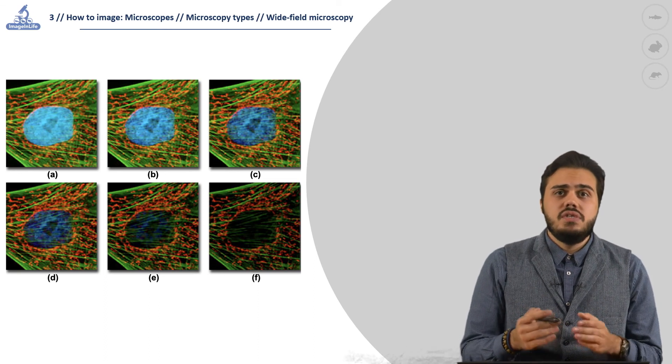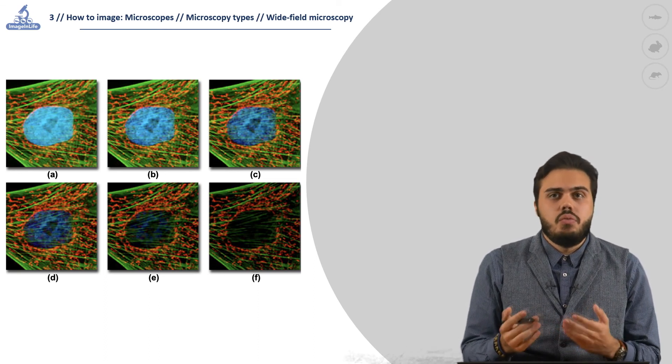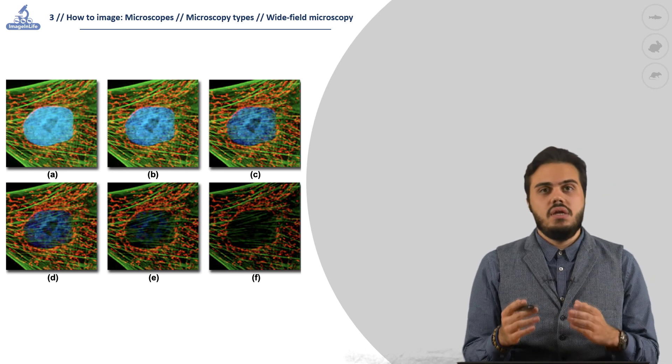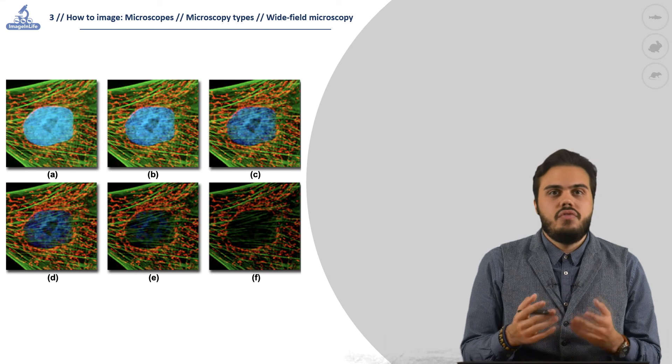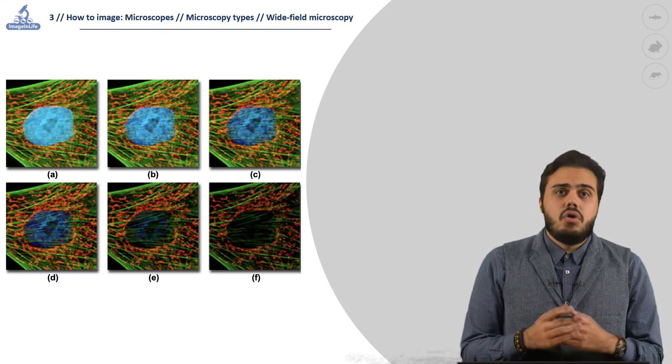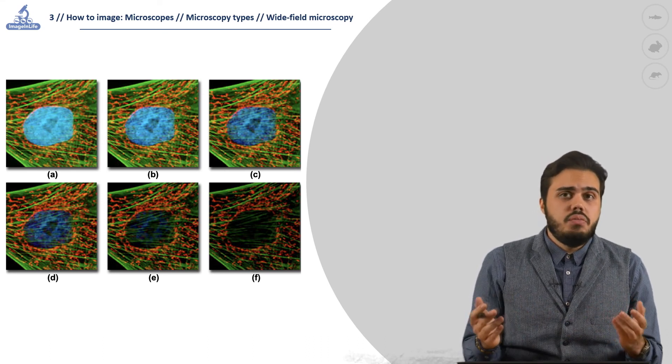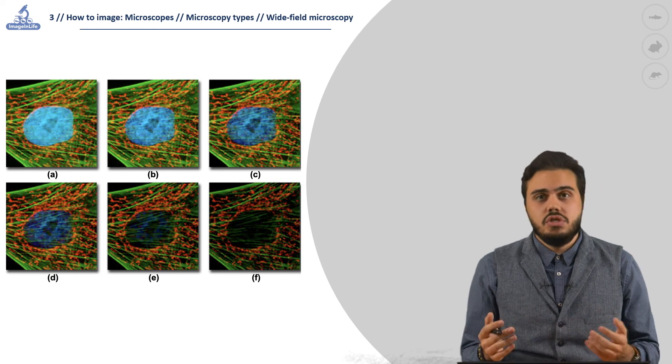These two physical characteristics can be used on purpose, like in FRAP, recovery of signal after bleaching, or FRET, resonant illumination after binding. But more often they are problems that need to be taken into account during the acquisition.